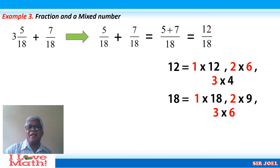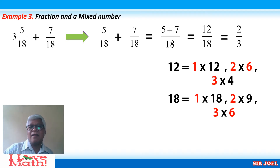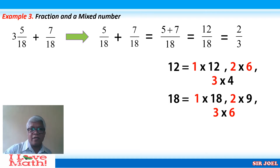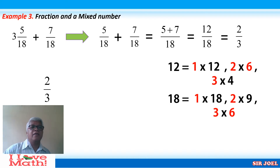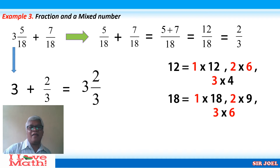Since 6 is the greatest common factor of 12 and 18, we will divide both by 6. 12 divided by 6 is 2, and 18 divided by 6 is 3. So 12 over 18 becomes 2 over 3. Copy your fractional sum 2 thirds. Going back to our problem, since we have the whole number 3, copy 3 and add it to 2 thirds. The sum is 3 and 2 thirds.